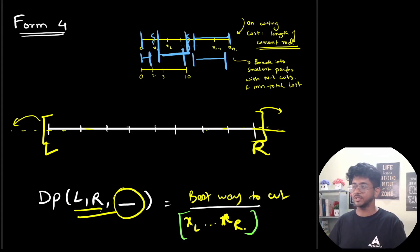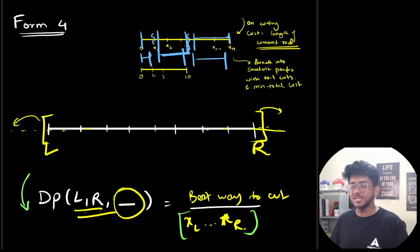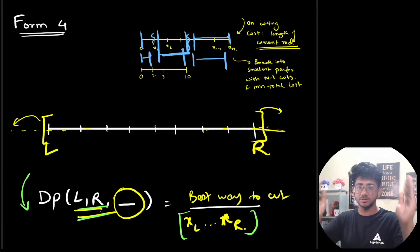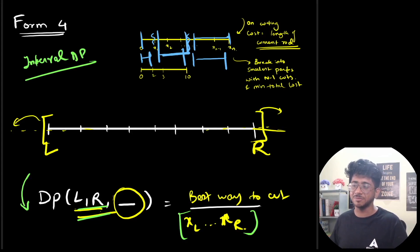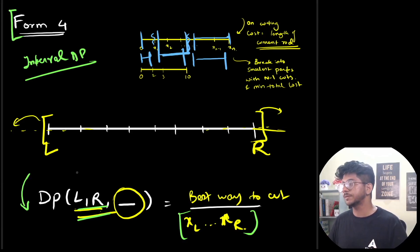So that's the substructure we use in these problems. We keep L and R, which represent the sub-interval. This is also called interval DP in many places, but I call it LRDP because we keep L and R. It's form four. We find the best way to cut XL to XR — meaning the minimum cost to cut that rod segment.